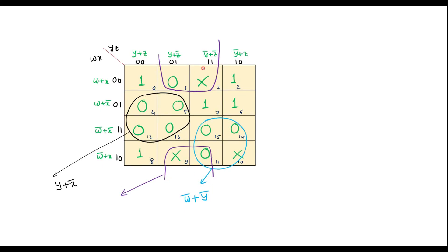So here, value of this is, it covers these two columns. Common factor is z bar. And here, it covers this row and this row. Here, the common factor is x. That is x plus z bar.